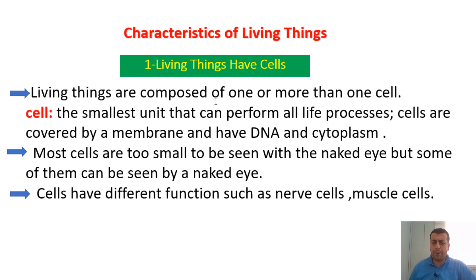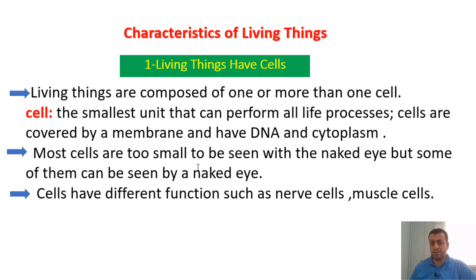Living things are composed of one or more cells — that means all living things are made of cells. A cell is the smallest unit that can perform all life processes, so it is the smallest unit of life. Most cells are too small to be seen with the naked eye, though some can be seen. For example, an egg is an example of a cell. But most cells require a microscope.